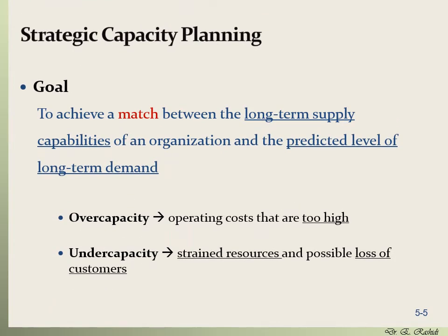Capacity planning is a long-term decision-making process, which is why it's called strategic capacity planning. For example, planning the space, the number of equipment, or the type of equipment are all long-term decisions. The goal of capacity planning is to match the long-term demand with the supply that you want to provide with your capacity.